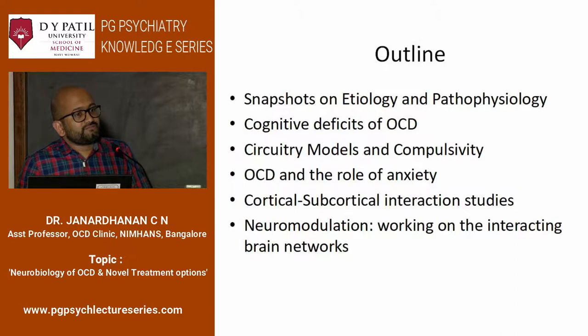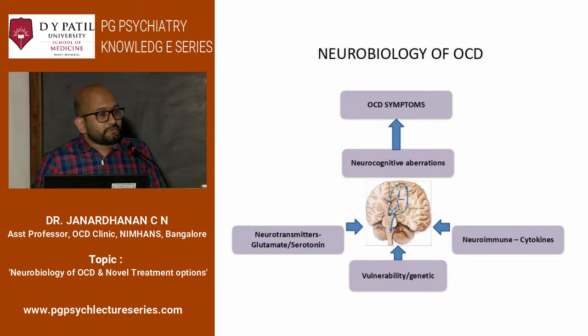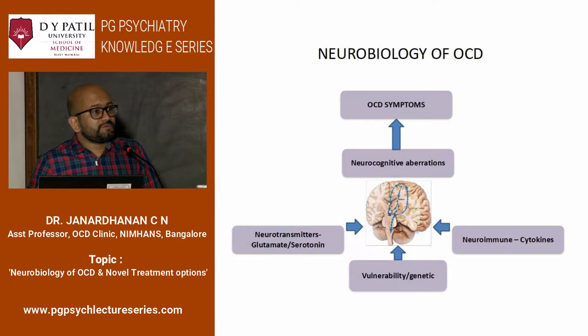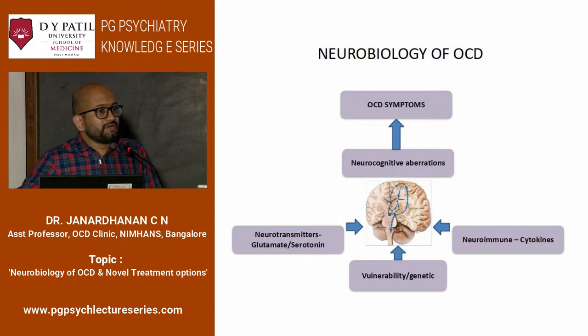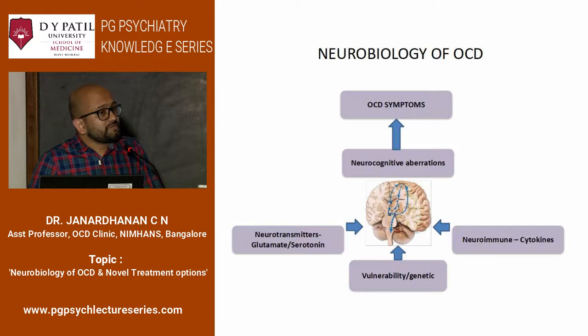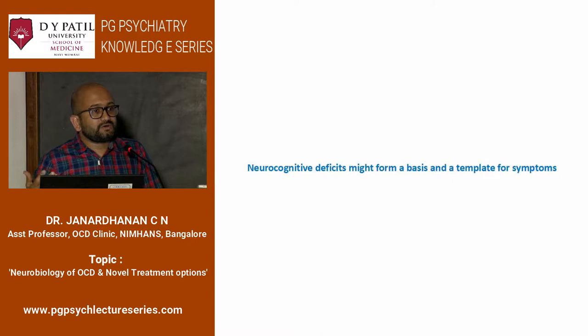In a nutshell, for any disorder you have various theories proposed starting from vulnerability-related factors such as genetics, then neuroimmune factors thought to happen during early development, then neurotransmitter abnormalities — which is immediately translated into the clinic through medications like SSRIs or antipsychotics as augmenting strategies. Probably much more superficial to our understanding are neurocognitive deficits, which are invariably seen in OCD — a highly replicated finding. And there is a possibility that neurocognitive deficits might form a template for the symptoms which are overtly seen.